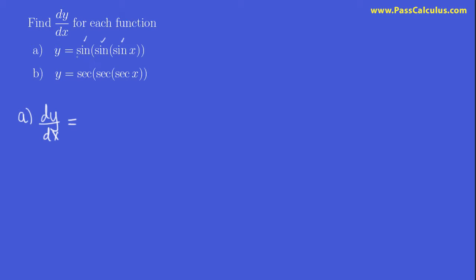The derivative of sine is cosine. So, cosine of the stuff in brackets here, times the derivative of the stuff in brackets. And what is that stuff in brackets? It's sine of sine x.